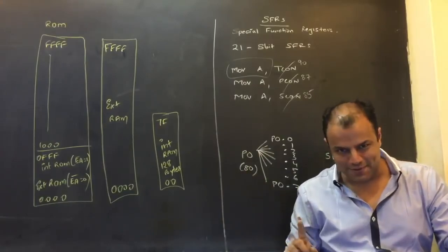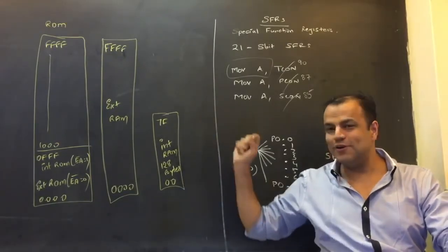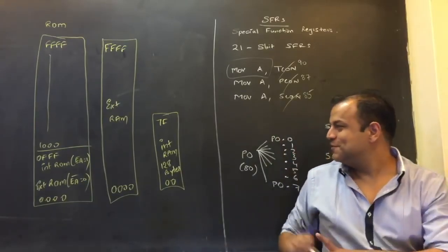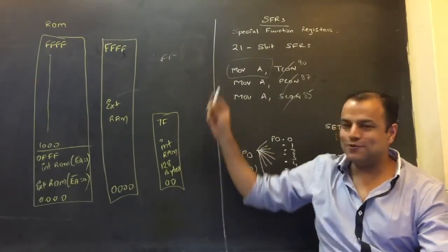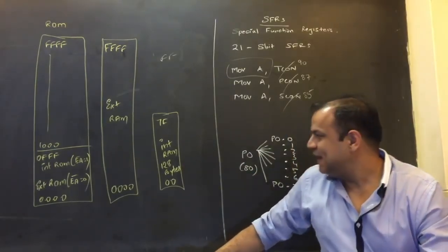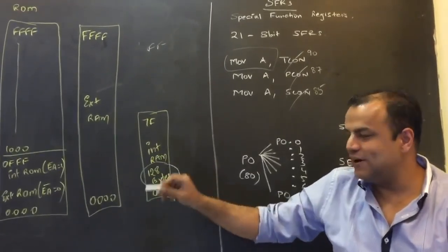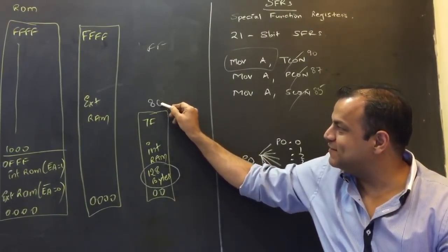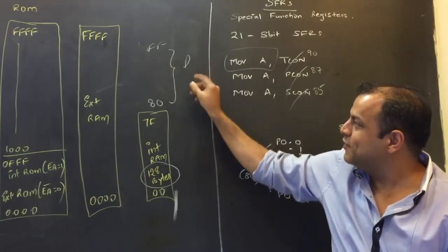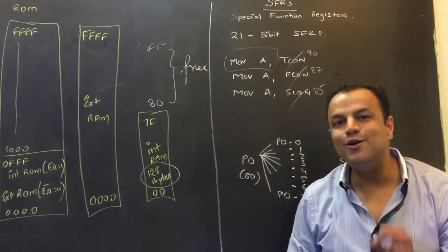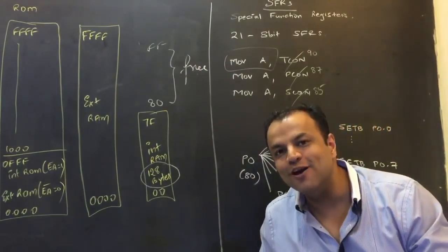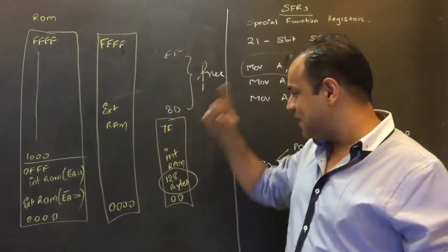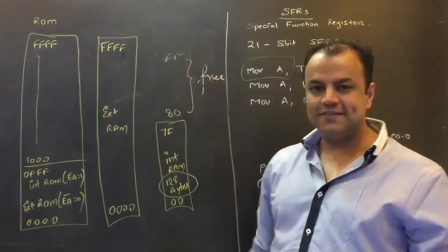Internal RAM uses 8-bit addresses, but very strangely it has addresses only from 00 to 7F. An 8-bit number can actually range from 00 to FF — that is 256 numbers. Internal RAM is strangely only 128 bytes, consuming addresses 00 to 7F. That means there is a whole range of addresses — 80 to FF — which are totally free, unused by any memory at all.